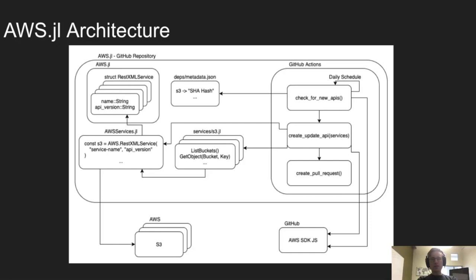This is the architecture component of the aws.jl design document. In the bottom right corner you can see an external dependency on awssdk.js — this is what we're basing all of our Julia functions off of. We have a GitHub Action which runs on a daily schedule. It takes the SHA hash of every service defined in that external dependency and compares it to what we have in our deps/metadata.json file. If the service doesn't exist in metadata.json, we create new definitions for that service. If the SHA hash doesn't match, we know Amazon has updated it, so we need to regenerate our definitions.